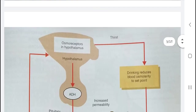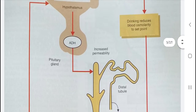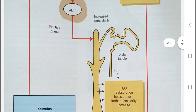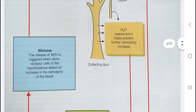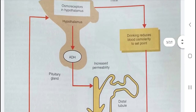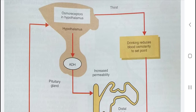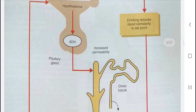ADH is secreted by the pituitary gland. The stimulus required for ADH release is stimulation of osmoreceptors in the hypothalamus when they detect an increase in blood osmolarity. As a result, thirst is induced, leading to water intake, which reduces blood osmolarity back to the set point.